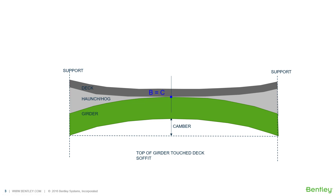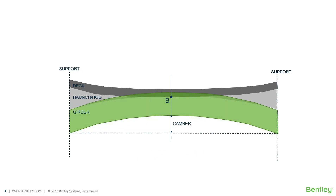The next scenario shows where the bottom of the deck, point B, is below the top of the girder, point C. This is practically wrong and cannot happen — the girder top cannot penetrate the deck.